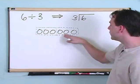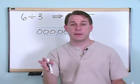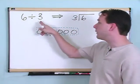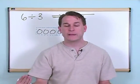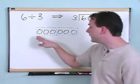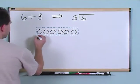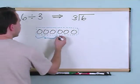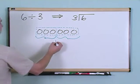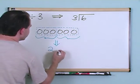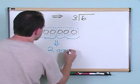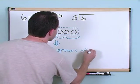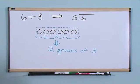You take the number that you're given and you chop it up into groups of however many you're dividing by, and the question is how many groups would you have? Well, you see right here, here's one group and here is another group. So there are two groups of three.